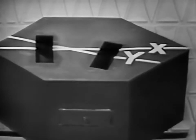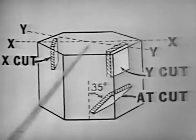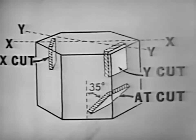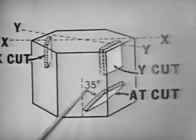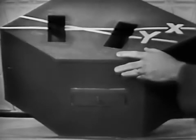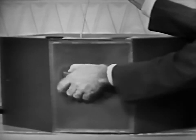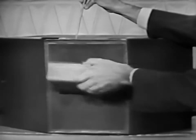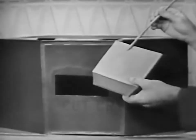For the third and final cut, we're going to cut at an angle from the Z-axis. Recall the Z-axis passes through the center of the crystal from end to end. For this cut, we'll cut at a 35-degree angle from the Z-axis. The cut is made right into the face of the crystal, and removing the cut from the crystal gives us only a small portion of the natural crystal. We call this cut an AT-cut — an AT-cut crystal.